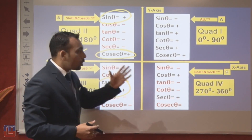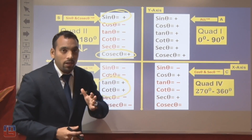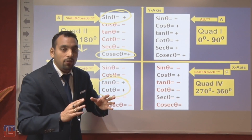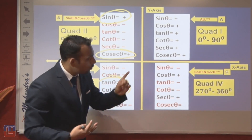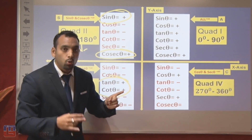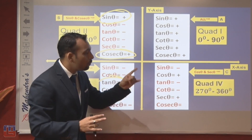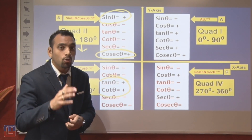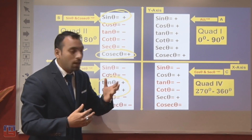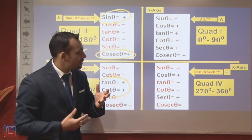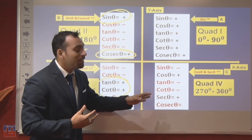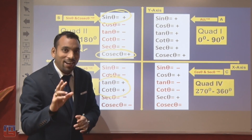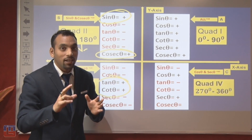In the fourth quadrant, angles from 270° to 360° lie. In the fourth quadrant, cos θ and sec θ are positive, and the rest will be negative.